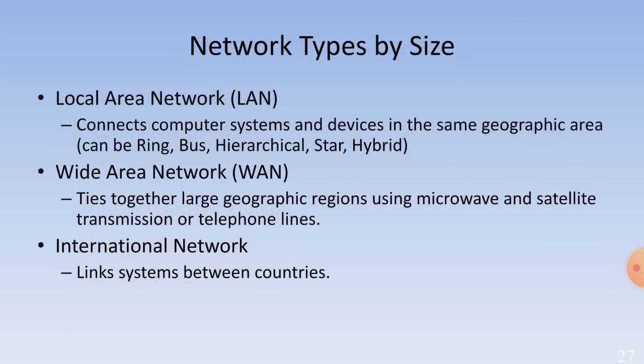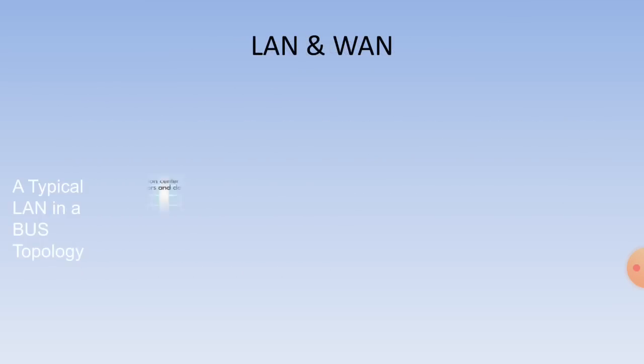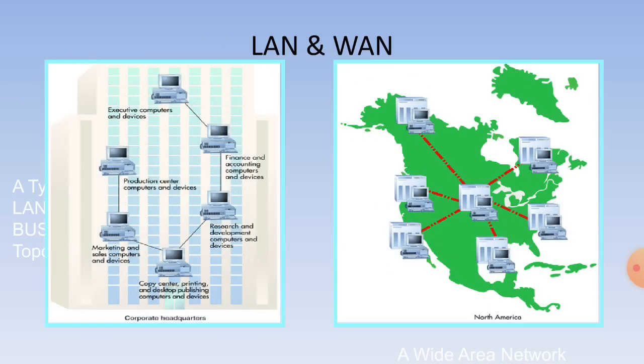Network types by size: Local Area Network (LAN) connects computer systems and devices in the same geographic area; it can use ring, bus, hierarchical, star, or hybrid topologies. Wide Area Network (WAN) ties together large geographic regions using microwave and satellite transmission or telephone lines, and an international network links systems between countries.